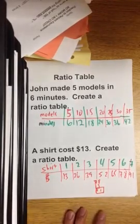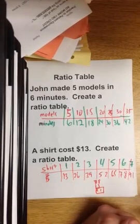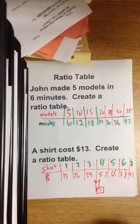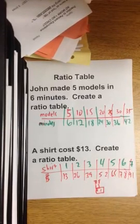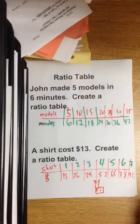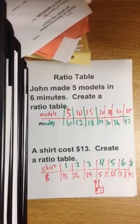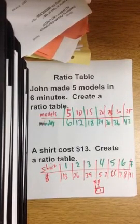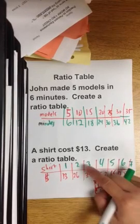That is a ratio table - it's comparing two different quantities. For example, if I ask how much you'll pay for five shirts, you'll say $65. Or if you spend $78, how many shirts can you buy? Six shirts. If you spend $39, you can get three shirts, and so on.